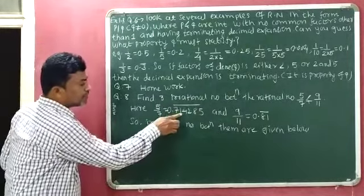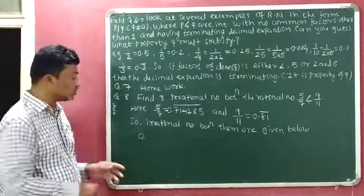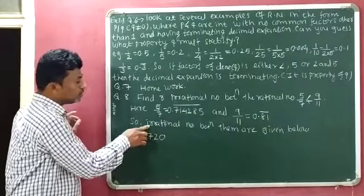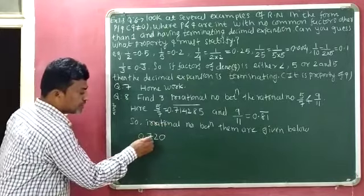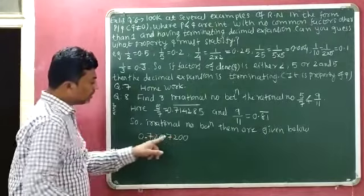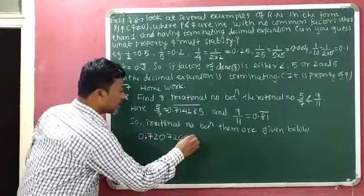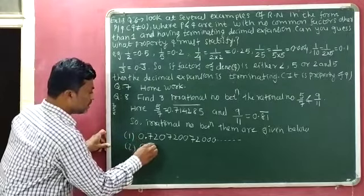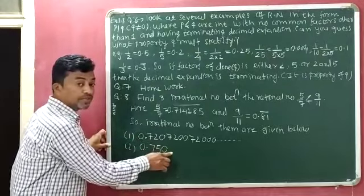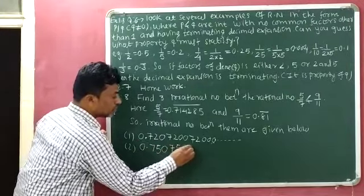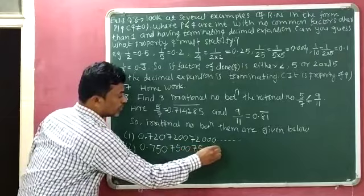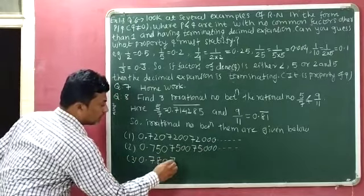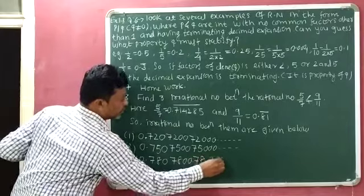The irrational numbers between them are: First: 0.7200720072... — we write 0.720, then 7200, then 7200... in a non-repeating, non-terminating pattern. Second: 0.7500750075... — we write 0.750, then 7500, then 7500... Third: 0.7800780078... — we write 0.780, then 7800, then 7800... These are irrational because they are non-terminating and non-repeating.